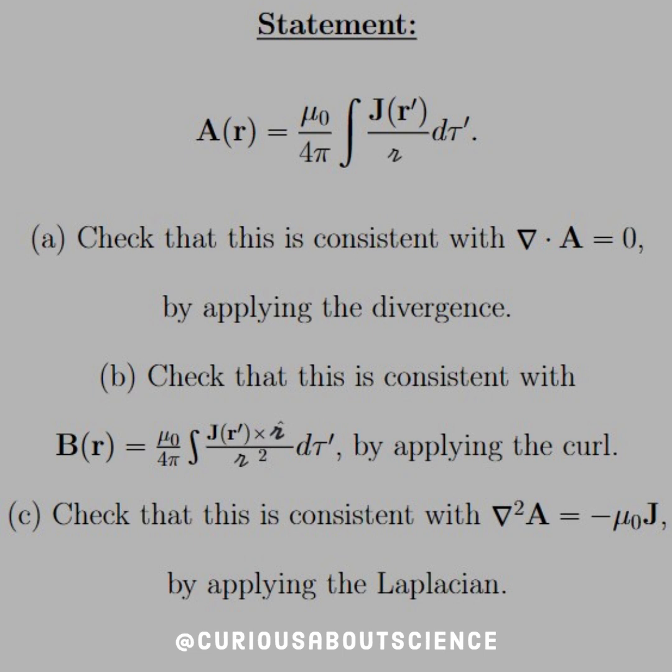Part b: check that this is consistent with B equal mu naught over 4 pi integral j cross script r hat over script r squared d tau prime by applying the curl.